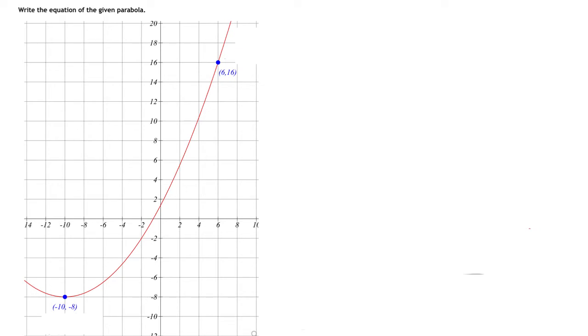The first thing you need to do when looking at this problem is find out where your vertex is. That's the highest or lowest point the graph gets to. In this case our vertex is at negative 10, negative 8. So let's write that down. Vertex is at negative 10, negative 8.